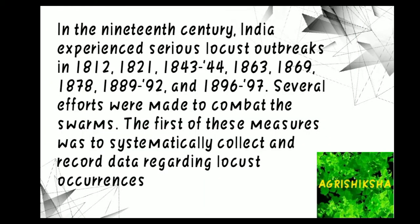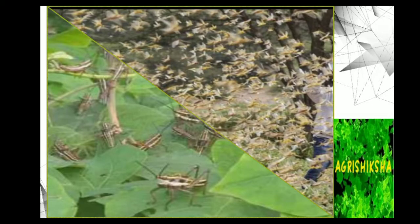In the 19th century, India experienced serious locust outbreaks in 1812, 1821, 1843, 1863, 1869, 1878, 1889, and 1896-97. Several efforts were made to combat the swarms. The first of these measures was to systematically collect and record data regarding locust occurrence. Here are recent images of a swarm of locusts.